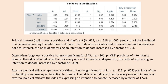In the model, political interest was a positive and significant predictor of the likelihood of a person expressing the intention to donate. The regression slopes are in units of log odds, not probabilities — I'm using 'likelihood' as loose terminology. A positive coefficient indicates that with increasing scores on the predictor there is increasing probability of being in the target group, while a negative coefficient means that with increasing values on the predictor there is a decreasing probability of being in the target group.